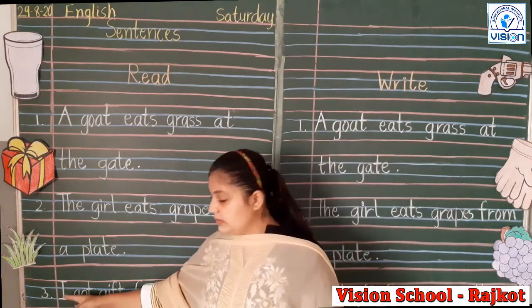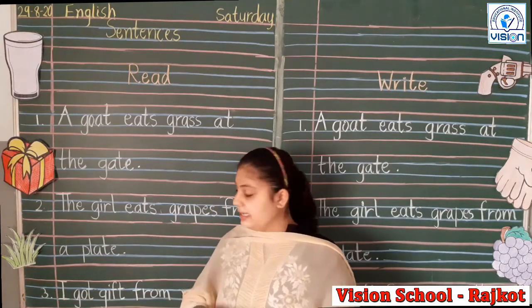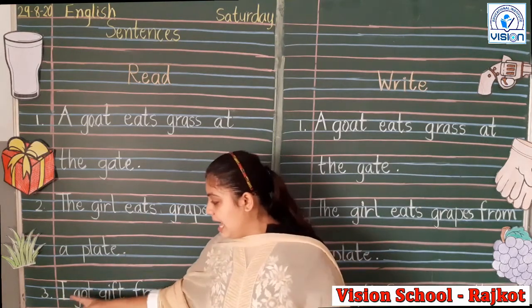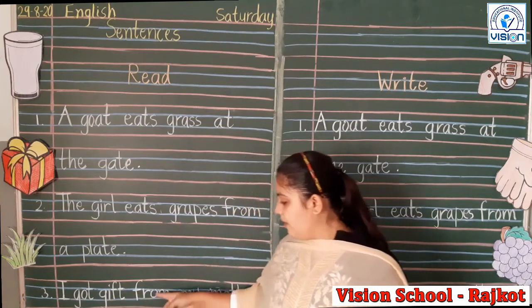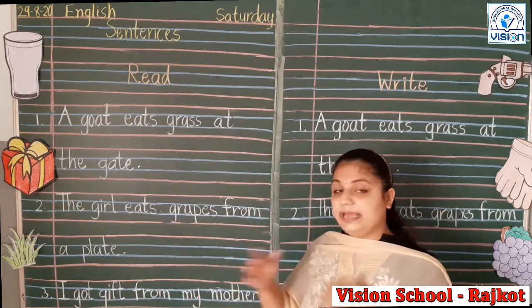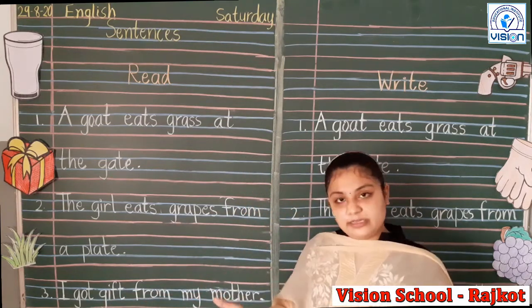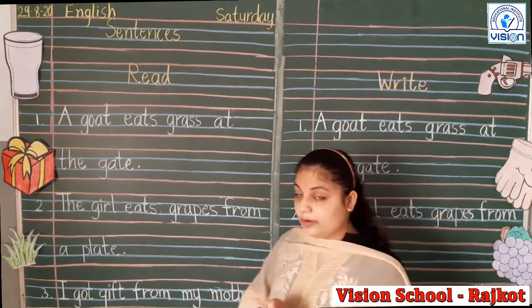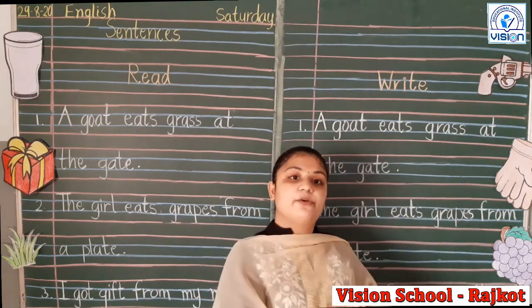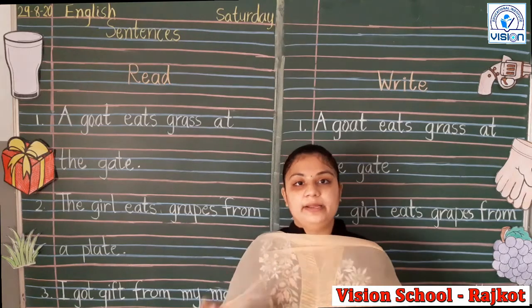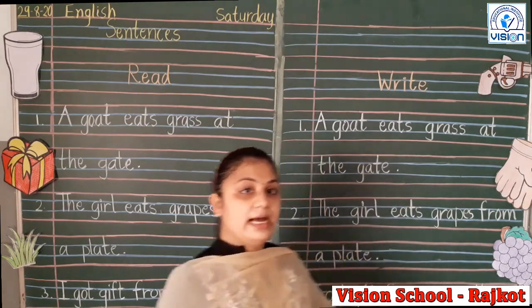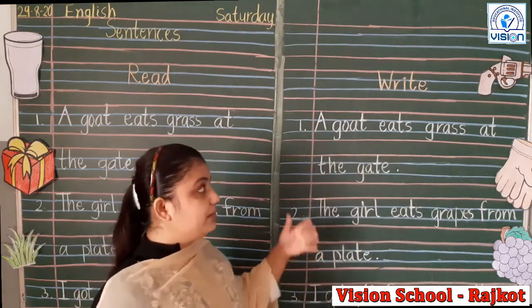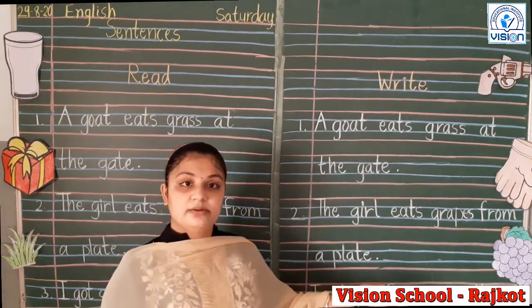Now the third sentence. 'I got a gift from my mother.' I got a gift from my mother. Okay, now we have to write this.